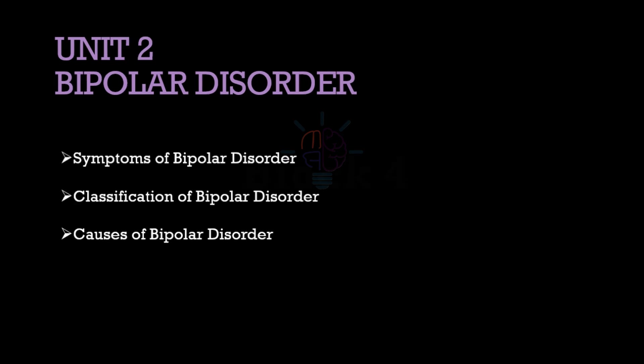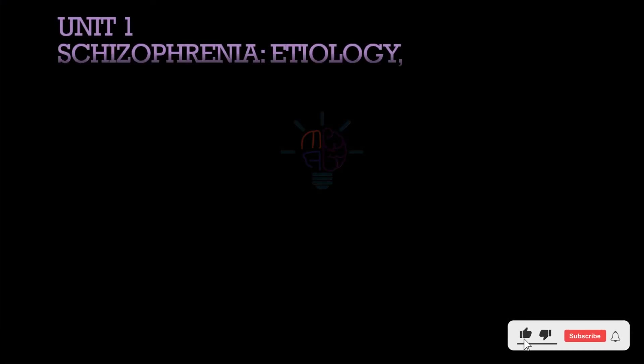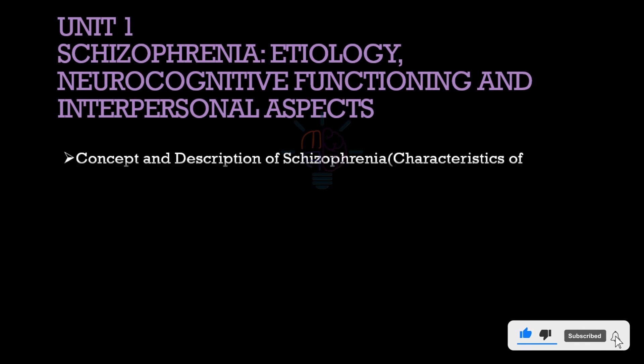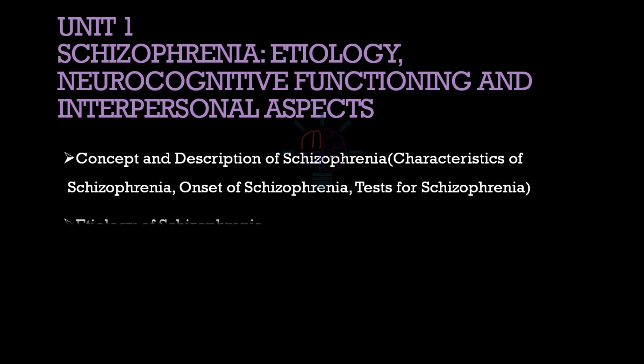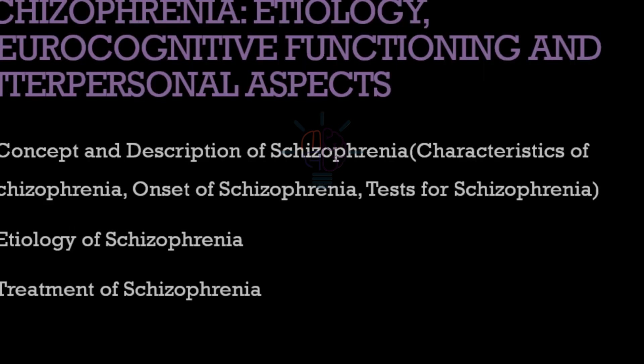Moving on to block 4, unit 1: concept and description of schizophrenia, characteristics of schizophrenia, onset of schizophrenia, and test for schizophrenia. Etiology of schizophrenia, and finally treatment of schizophrenia.